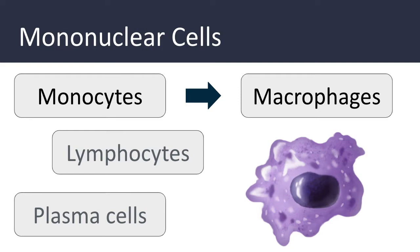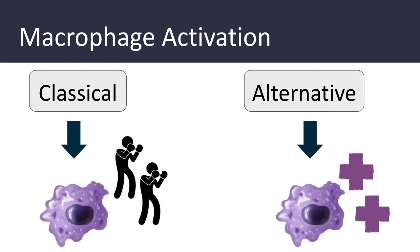Macrophages can become activated through two different pathways: the classical and alternative pathways. The classical pathway produces macrophages with an enhanced ability to kill ingested organisms and to secrete cytokines that further stimulate inflammation — these are the macrophages responsible for injuring normal tissues. In contrast, the alternative pathway produces macrophages that are not actively microbicidal, and the cytokines that activate these may also inhibit the classical pathway.